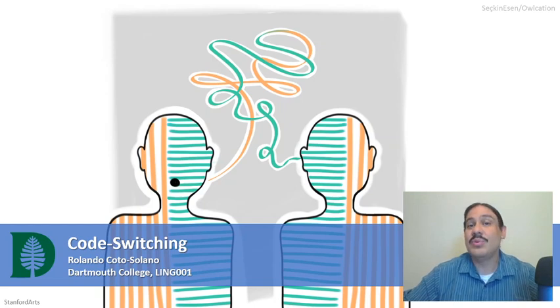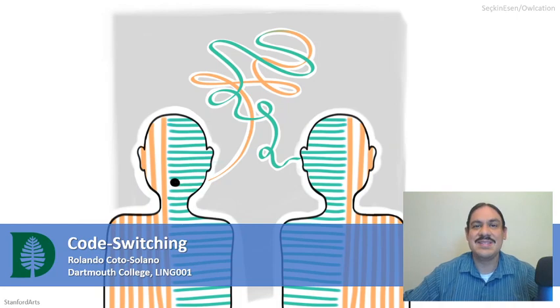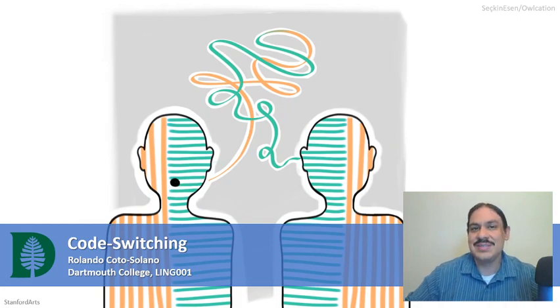In this video, we will look at a very common pattern for alternation between two languages. It's called code switching.